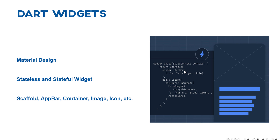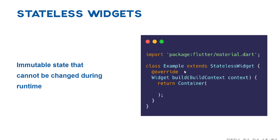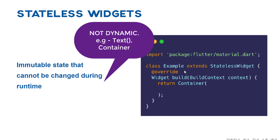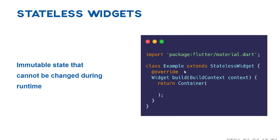With the help of widgets we can build beautiful native UI applications. We have material widgets, as well as stateless and stateful widgets. Examples include scaffold, app bar, container, image, and icon. A stateless widget is an immutable widget — we use it with a container widget to render the application.